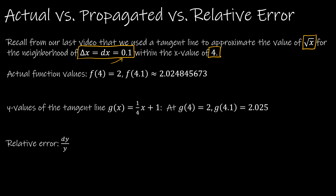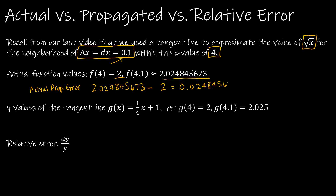The actual propagated error would be taking 2.024845673 minus 2. So our propagated error is 0.024845673. That's the actual propagated error.